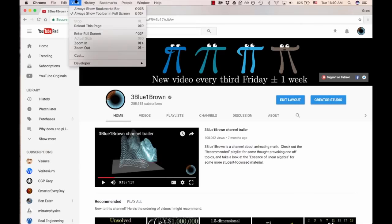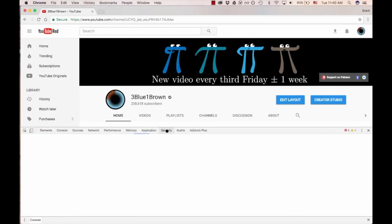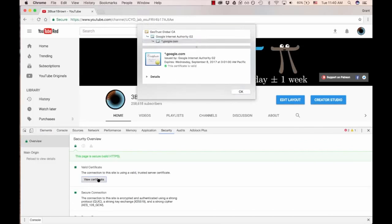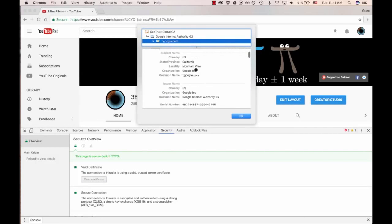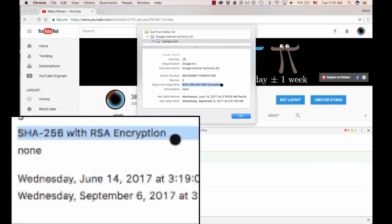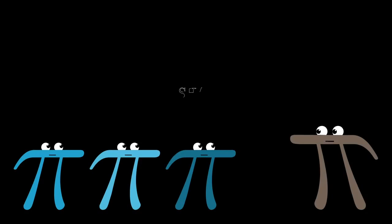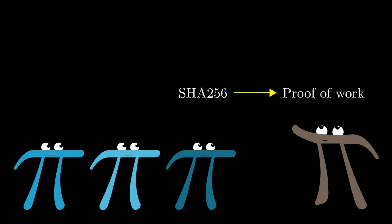If you were to look at what algorithms underlie the secure connection that your browser is making with YouTube right now, or that it makes with your bank, you will likely see the name SHA-256 show up in there. For right now, our focus will just be on how such a function can prove that a particular list of transactions is associated with a large amount of computational effort.